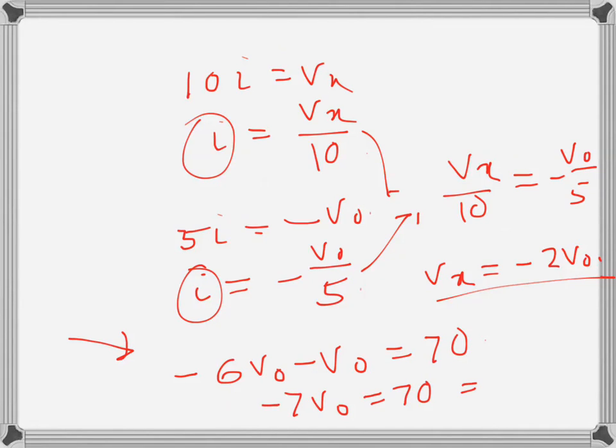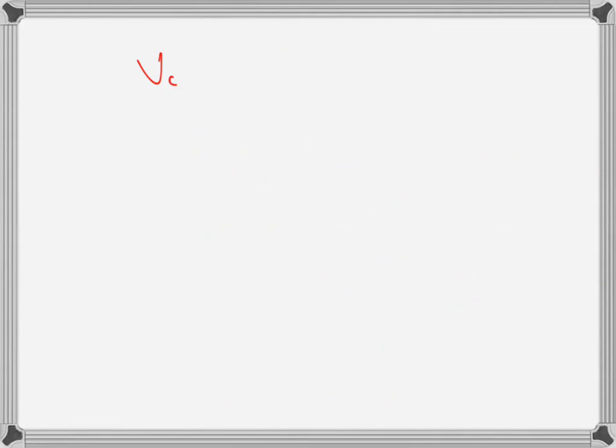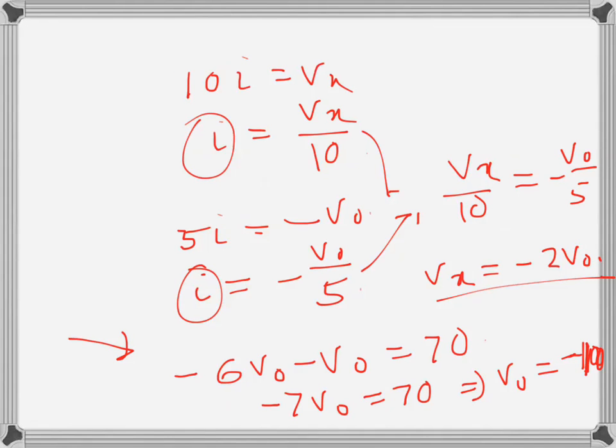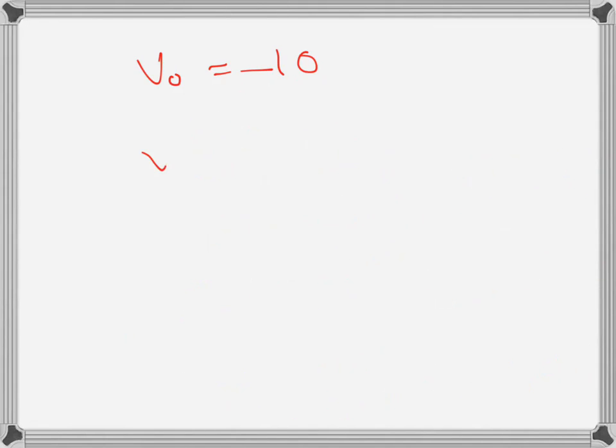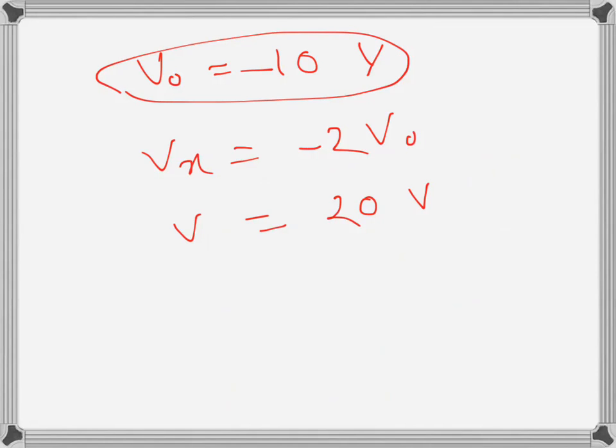Or v naught is negative 10, so minus 10 volts is the voltage of v naught. So basically, I will rewrite it: minus 10. And then I can easily write vx. Vx is equal to minus 2v naught, or 20 volts. So that's minus 2 times minus 10 is plus 20. So v naught is minus 10 volts, and vx is 20 volts.